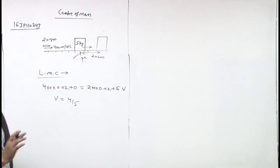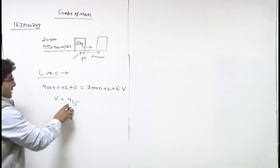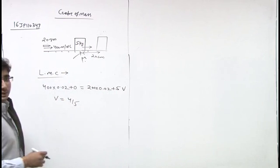So final speed is 0, and initial speed is 4 by 5, distance 20 centimeter.